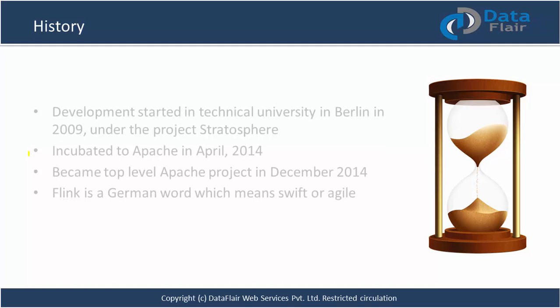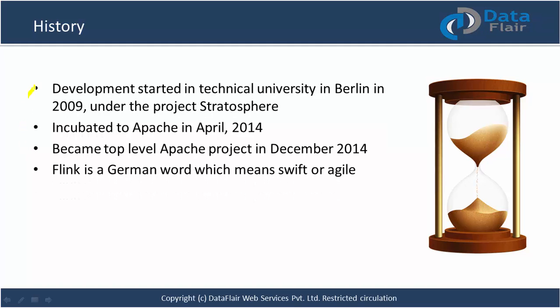Development of Flink started at the Technical University in Berlin in 2009. Initially, it was under a project called Stratosphere. Flink was incubated in Apache in April 2014 and soon became a top-level project. The name Flink is actually a German word which means swift or agile.